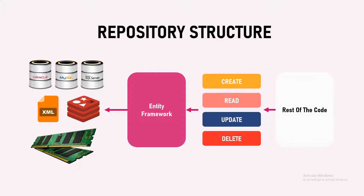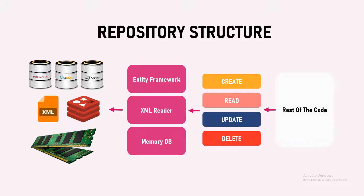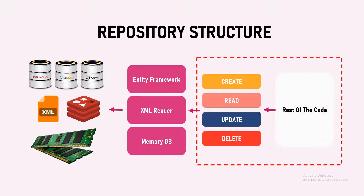In the repository structure, we handle only CRUD operations — create, read, update, and delete. So the front side of the code or the business logic side of the code will issue functions to create, read, update, and delete. It does not know whether we are using Entity Framework, any other XML reader, a memory DB, a Redis cache, or whatever in the background — the front side of the code does not need to know about it. It will just know create, read, update, and delete. So that will isolate the rest of your code from whatever is changing in the backend. This is what a repository structure is.